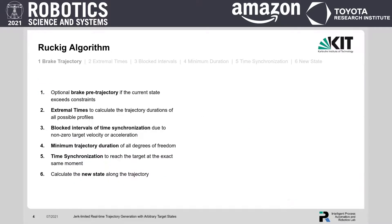Our proposed algorithm has six steps, that we want to introduce briefly. At first, we check if the current kinematic state exceeds the constraints, and if so, we calculate a brake trajectory that will meet the constraints as fast as possible.